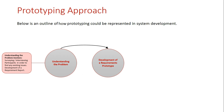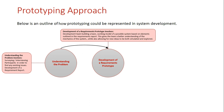The requirements prototype is a working model of the system with its foundations being what was in the requirements report — what are the requirements of this system. So basically they build this working model focused on what was in the requirements report. This will give the team a better understanding of the mechanics of the system and how it works, and then allow the actual team to put their ideas onto the new system where it's actually being modeled and they can see how things work.